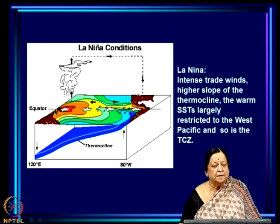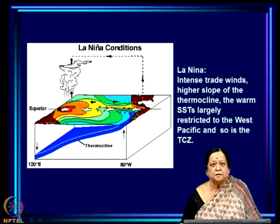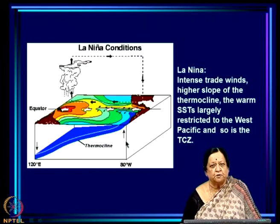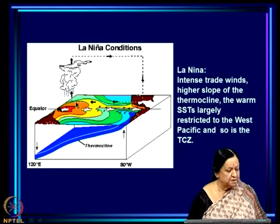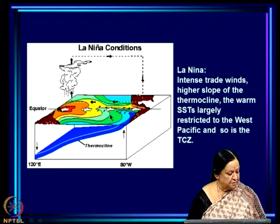La Niña is the opposite — the cold phase. You have intense trade winds and intense upwelling, so the SST in the east is very cold relative to the west, and the thermocline slope is higher than normal. Compared to normal, El Niño has a lower slope of the thermocline and La Niña has a higher slope. Warm SSTs are largely confined to the west Pacific, as is the tropical convergence zone. These are the two extreme phases of this coupled ocean-atmosphere system, and you see how the atmosphere and ocean components go together.